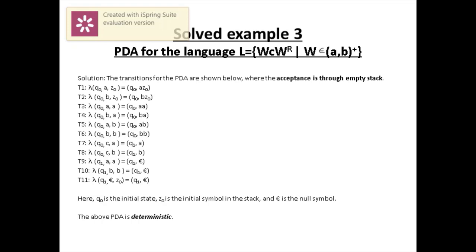Another example is the language WCW^R. The pattern is: W is a string of A and B with at least one symbol (positive closure), followed by single symbol C, followed by W^R, the reverse of W. So whatever combination of A and B is written in W, that same string is reversed after C. Numerous valid strings can be generated following this pattern and must be accepted by the PDA, so we must design the corresponding PDA accordingly.